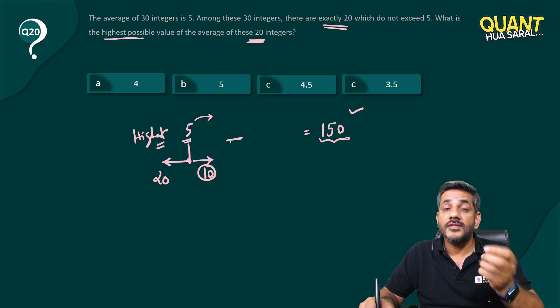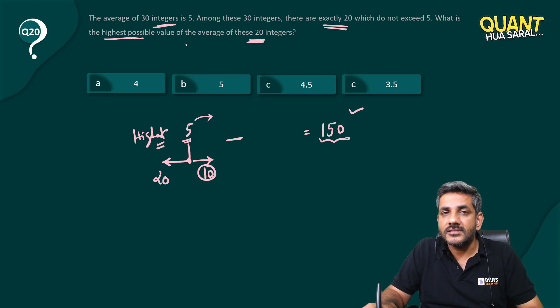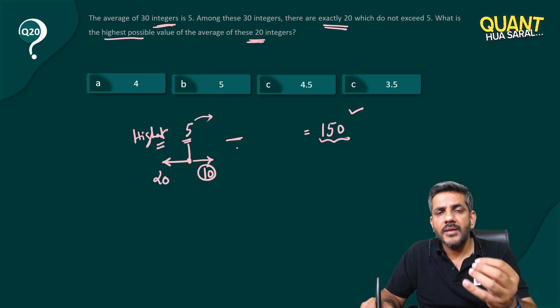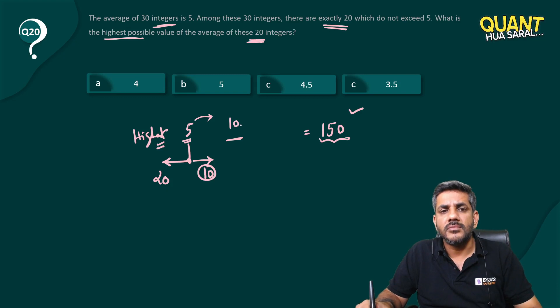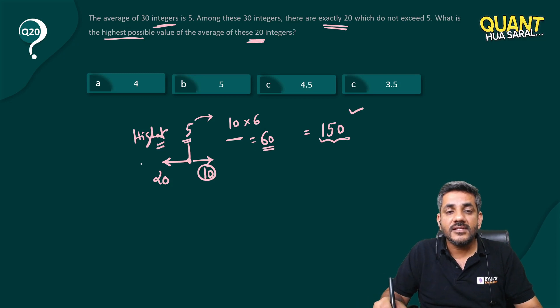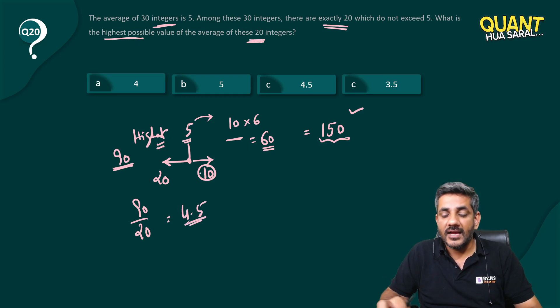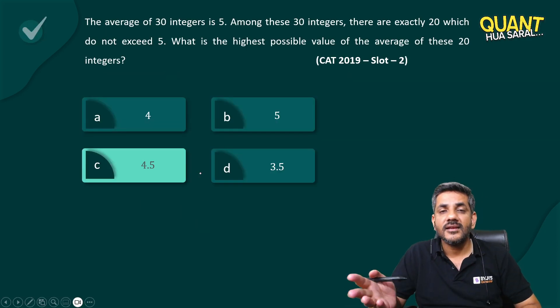But he has said that all of them are above 5. If all of them are above 5 and they all are integers, I can take the minimum possible all 10 numbers as 6 each. That means their sum is 60. If their sum is 60, the sum of these 20 is 150 minus 60, that is 90. And if the sum of these numbers is 90, which is the sum of 20 numbers, what is the average? 4.5. And that's it, option C is the correct answer.